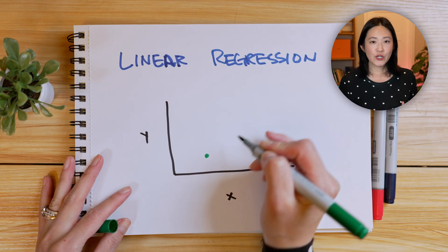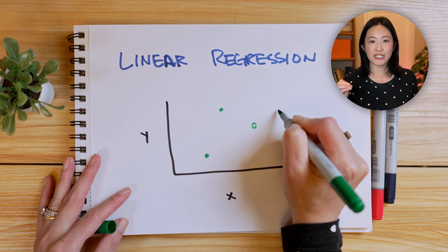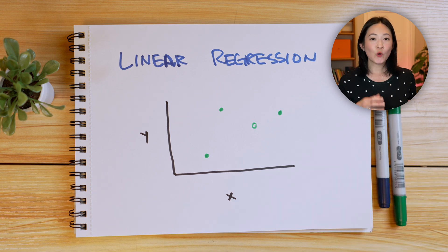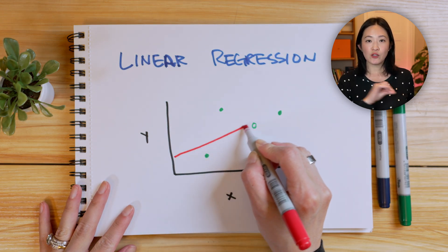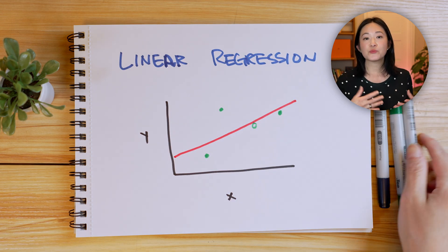Another type of model is the linear regression model, which fits a line through data points to represent the relationship between an input, like the size of a house, and an output, like the price of that house. Imagine you have a graph with points that represent prices of houses of different sizes. The goal of linear regression is to draw a line through those points that best predicts the price of the house based on its size. When setting up your model, the first thing to figure out is what kind of prediction it can make — can it make a straight line prediction, or a curved one? This is called the hypothesis class.